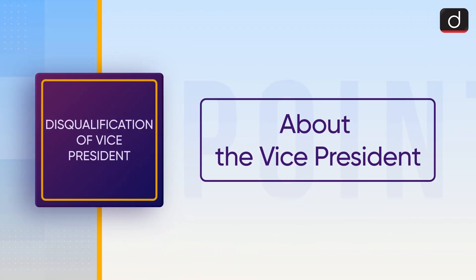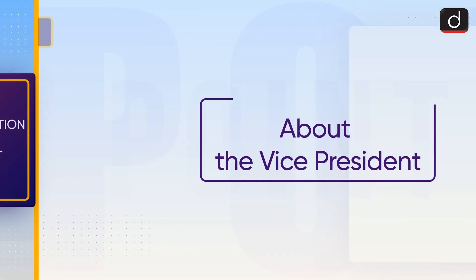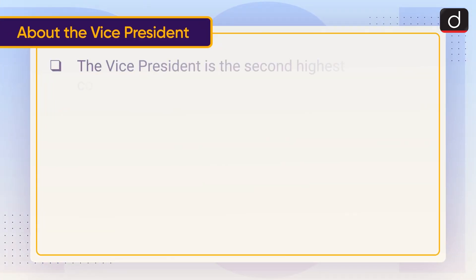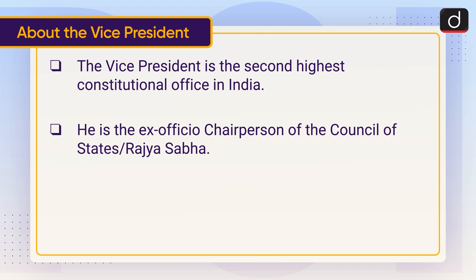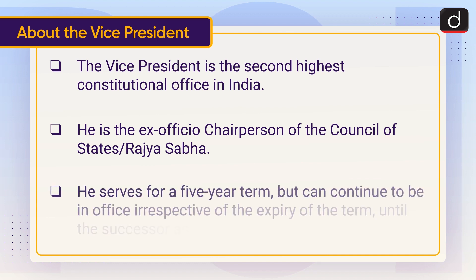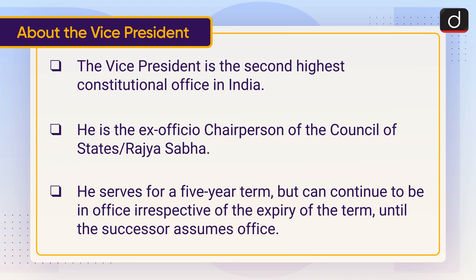Now let's discuss about the Vice President. The Vice President is the second highest constitutional office in India. He is the ex officio Chairperson of the Council of States, or Rajya Sabha. He serves for a five-year term but can continue to be in office irrespective of the expiry of the term until the successor assumes office.